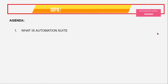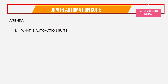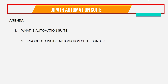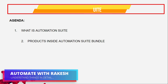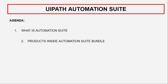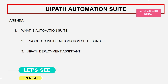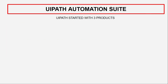In this video, I'm going to cover what automation suite is and your general understanding around it. We're also going to discuss the different products inside the automation suite bundle. Once you have an understanding of what automation suite is, we'll look at different products, and finally we'll go through the UiPath Deployment Assistant — what it is and how to utilize it. Let's get started.